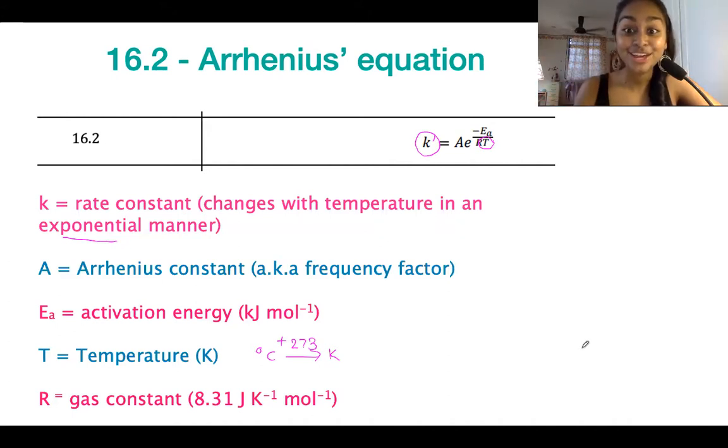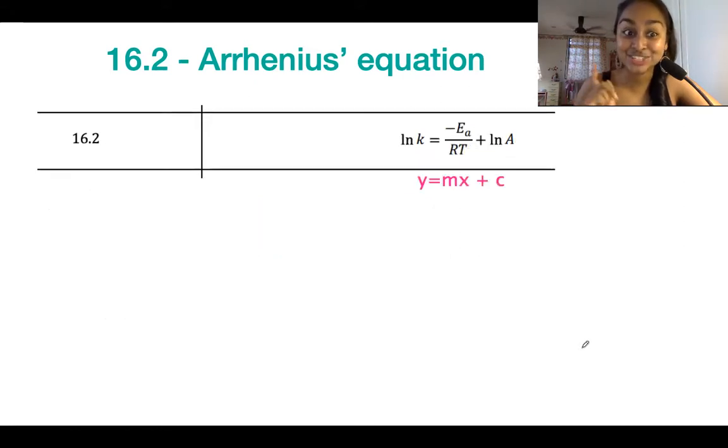In your data booklet however, you also get a different version of Arrhenius' equation. So this version over here, this is the modified version of the equation that we can get by taking the natural log on either side. But don't worry, it's kind of given to you in the data booklet already.